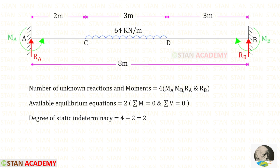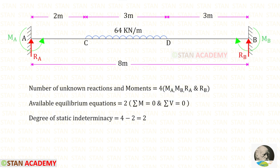Now let us find the degree of static indeterminacy. In this beam, the number of unknown reactions and moments are 4: MA, RA, RB, and MB. The available equilibrium equations are 2. So the degree of static indeterminacy will be 4 minus 2, which gives us 2.